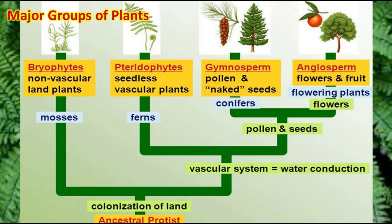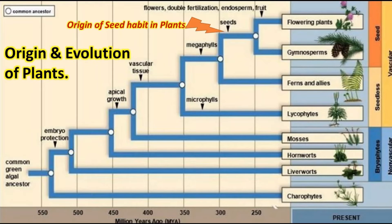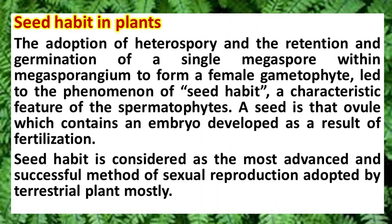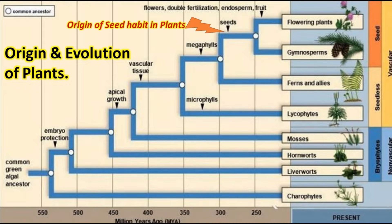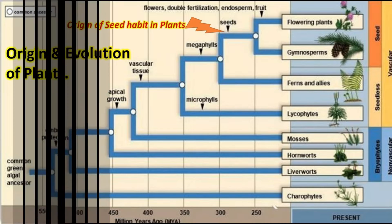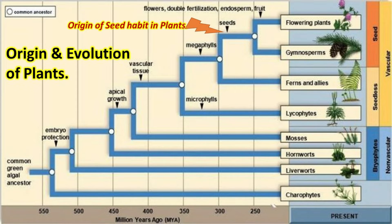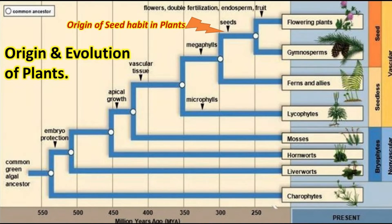In gymnosperms, seeds were produced outside the ovary. In angiosperms, seeds were produced inside the ovary, and hence the group is called angiosperms. The seed habit is said to have originated around 300 million years back, and the first group of plants which exhibited seed habit was gymnosperms.